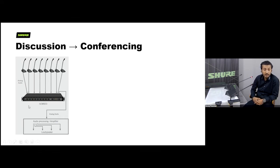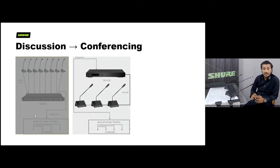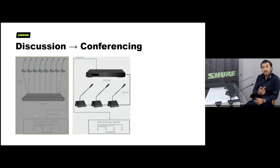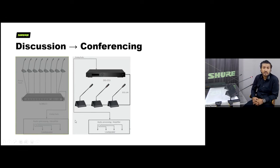That traditional approach involves a lot of cables going from each table to the rack. A more sophisticated way is the digital discussion system. In this setup you still have the gooseneck and speakers, but you don't need individual cables from every seat back to the rack. Each unit has its own DSP, speaker, and microphone, and they are all daisy-chained together. From the last unit it goes back to the central unit — the CCU — which is the heart of the digital discussion system.